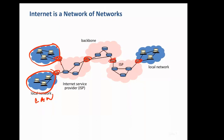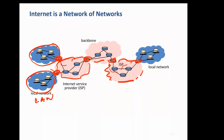These routers exchange information with each other and find out routes, because IP addressing is a structured address. IP addresses of companies in Bangalore would be different from those in New York or different parts of India. Based on this structured addressing, packets are routed — all routers exchange information to decide where to send a packet based on its IP address. Messages travel from one router to another.